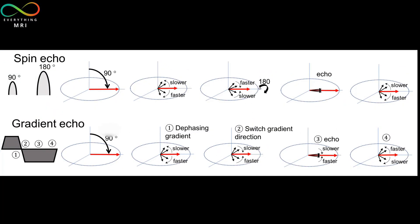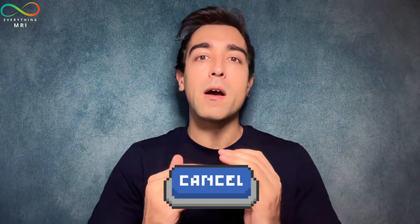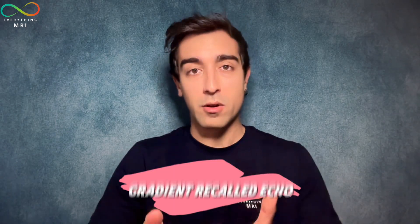As far as the encoding process is concerned, this is based on applying a dephasing gradient along the readout axis. This gradient intentionally and rapidly disperses the phase of the precessing spins, speeding up the dephasing of the transverse magnetization. After this dephasing step, a rephasing gradient of equal magnitude but opposite polarity is applied along the same frequency encoding axis. This reversal cancels out the phase shift created by the initial gradient, and as the spins realign and refocus coherently, they form the signal we know as the gradient recalled echo.